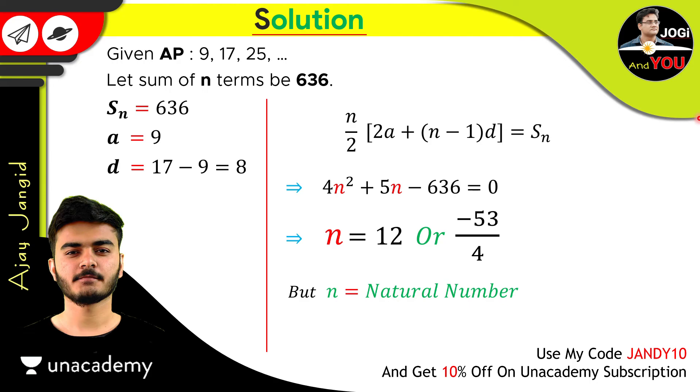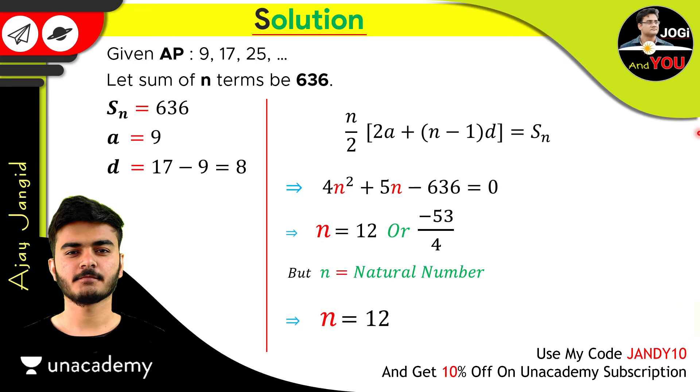So it's always positive. And also, it cannot be a rational number. So it's clear that, just cancel out this minus term and consider this positive value as our answer. So you see how we cancel the negative term?